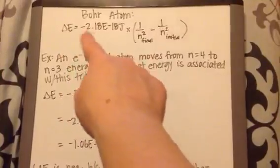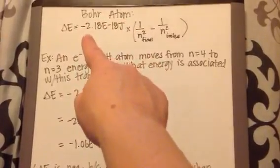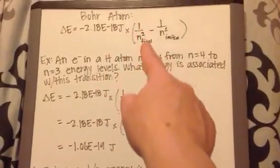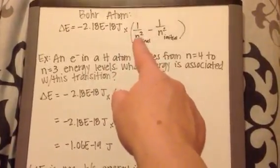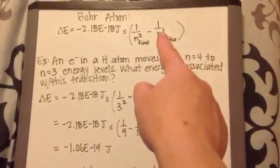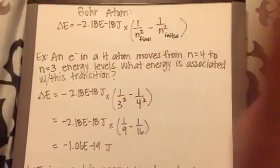Change in energy, now this is just a constant, is equal to negative 2.18 times 10 to the negative 18th joules times 1 over the final energy level squared minus 1 over the initial energy level squared. Delta means final minus initial.